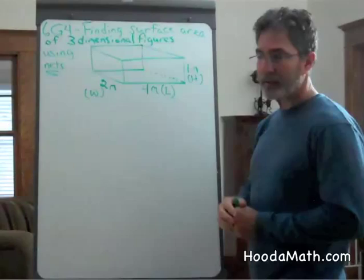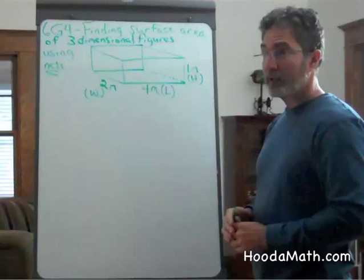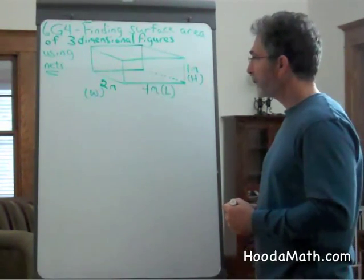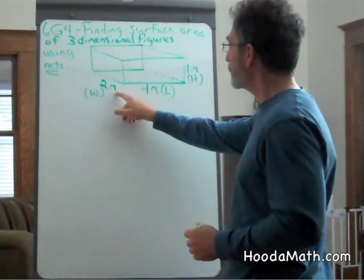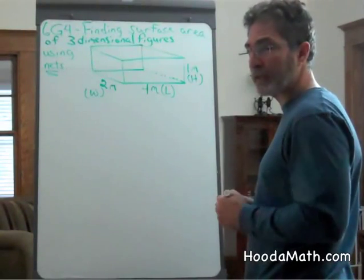The net that I'm going to make is if I flatten this box out so you can see all six faces. In this case, this is a two-by-four-by-one-meter rectangular prism.